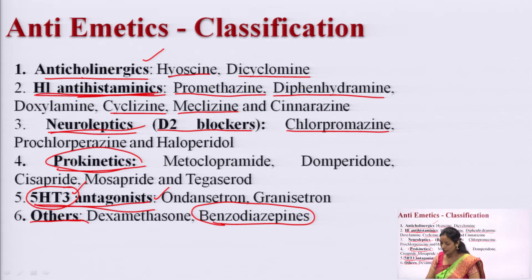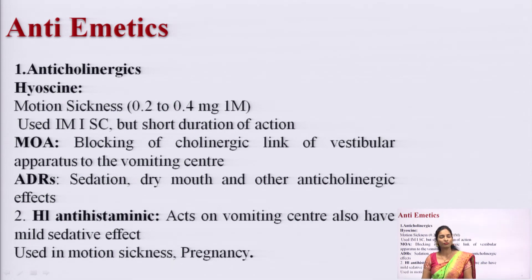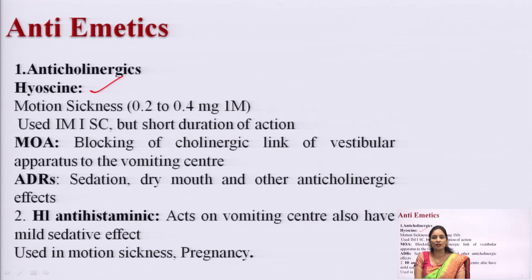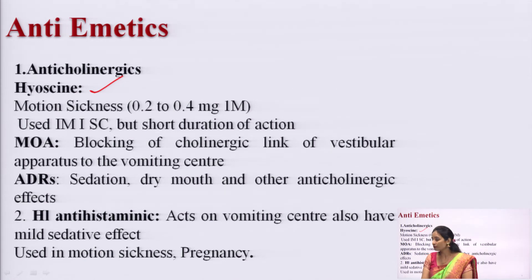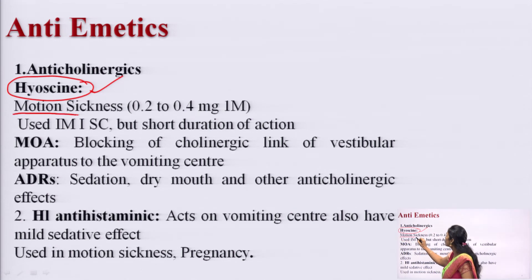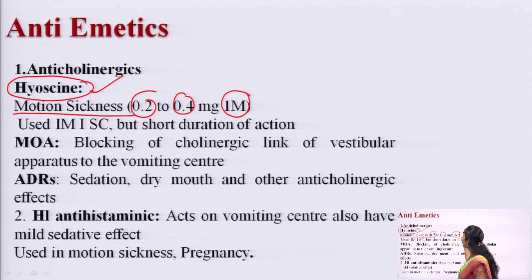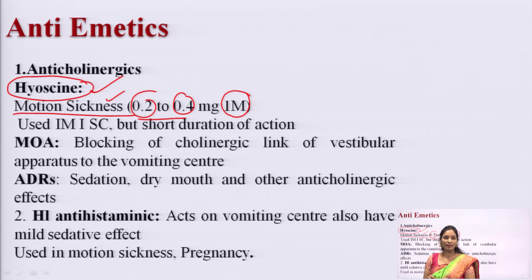Now we discuss each anti-emetic class. First, anticholinergics: hyoscine is used in motion sickness at a dose of 0.2 to 0.4 mg by intramuscular route. Within that dose range by IM route, you can treat motion sickness. It can also be given by IV or subcutaneous route, but it has a short duration of action.